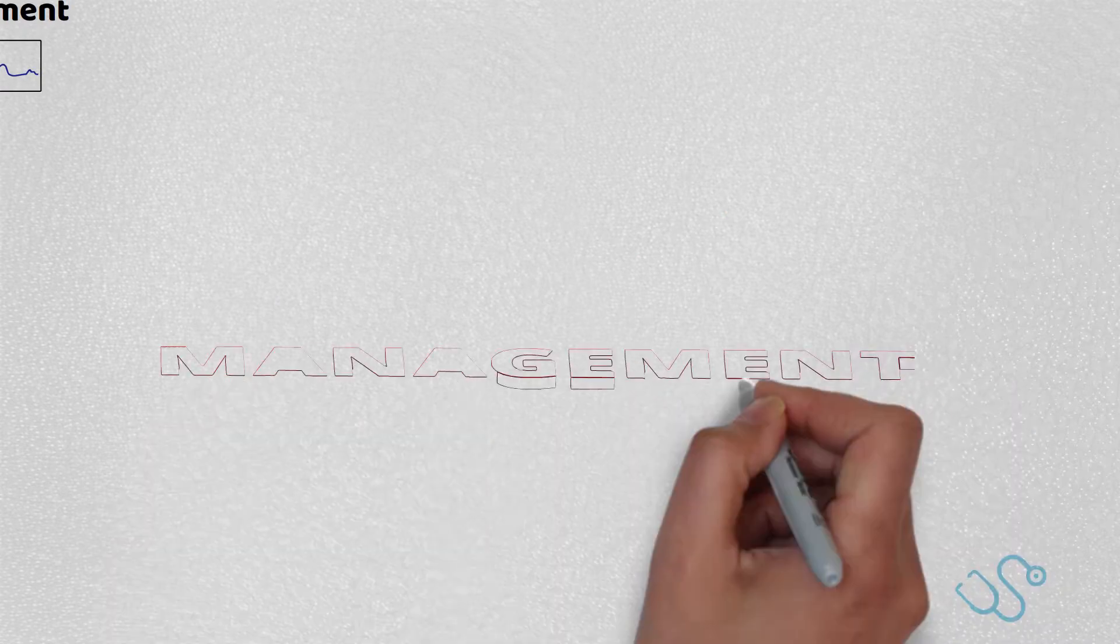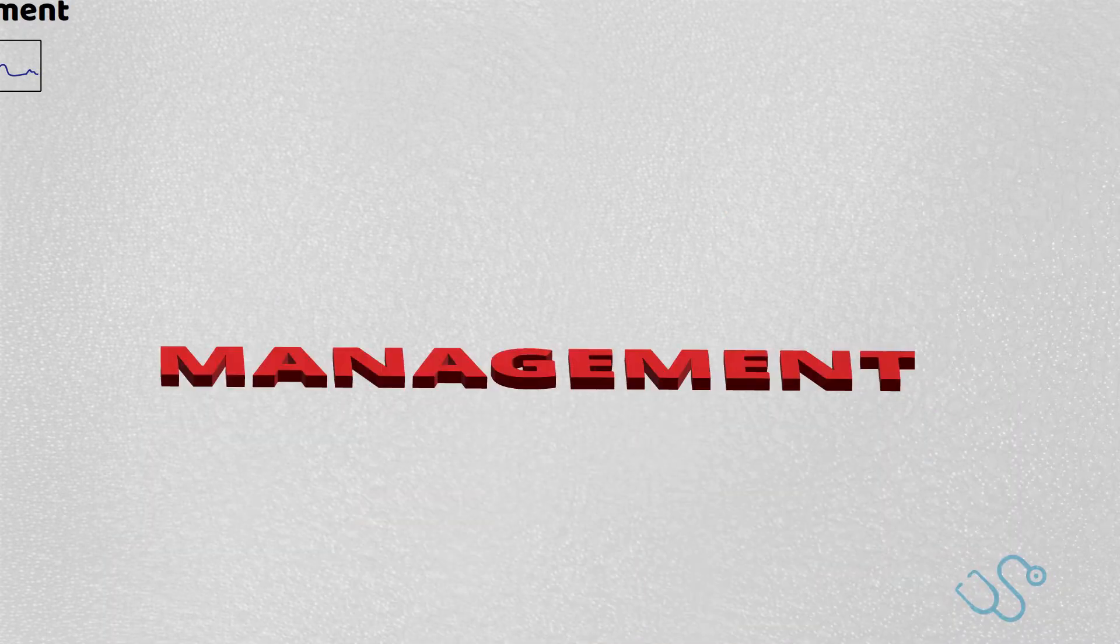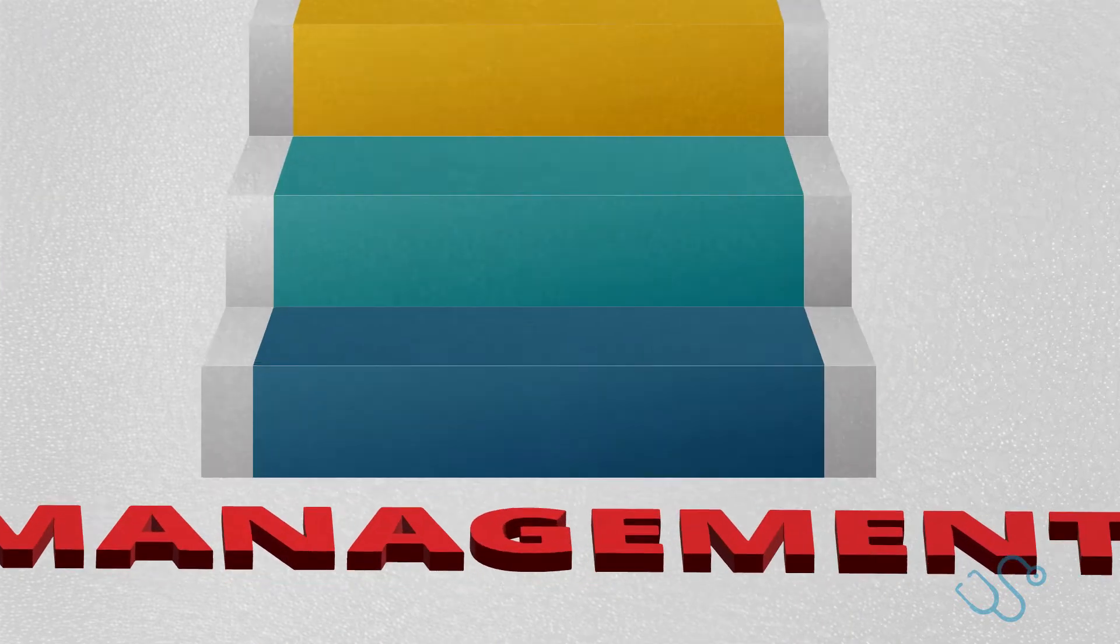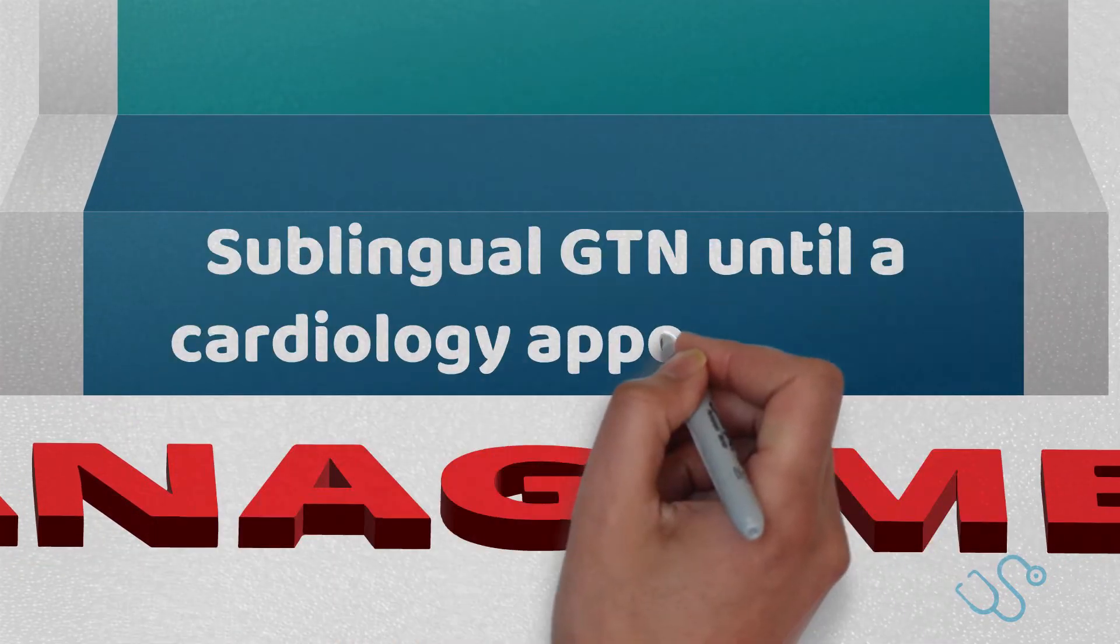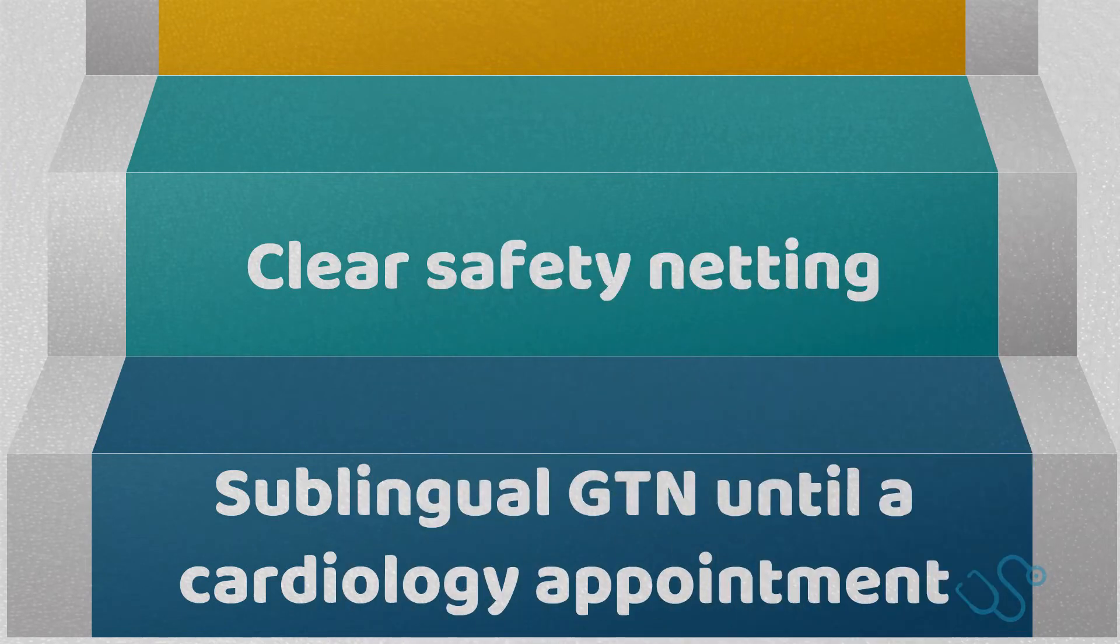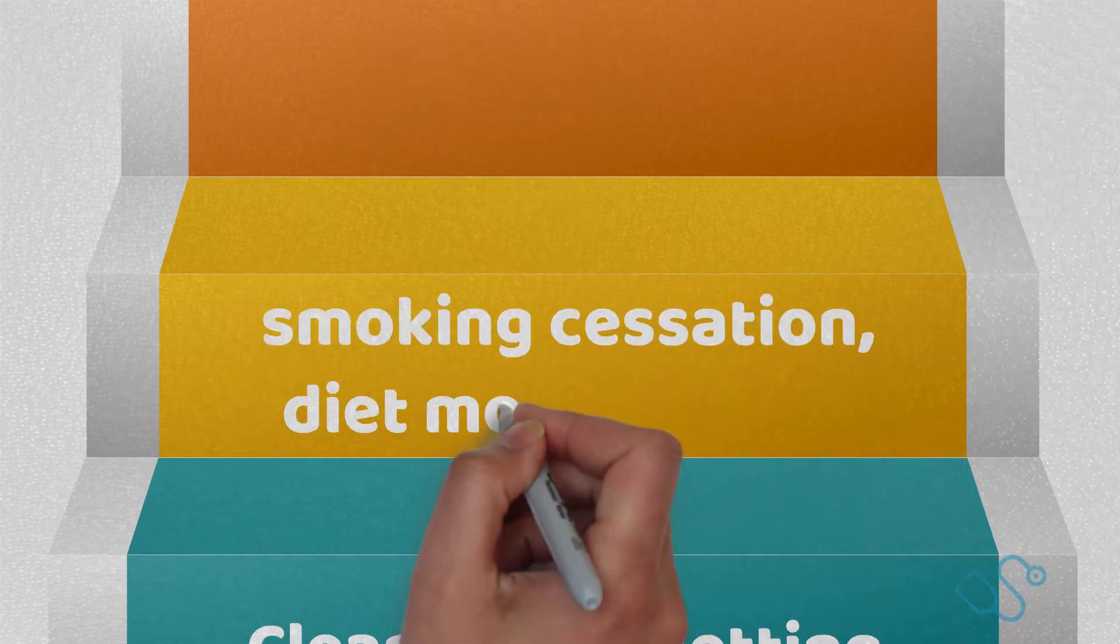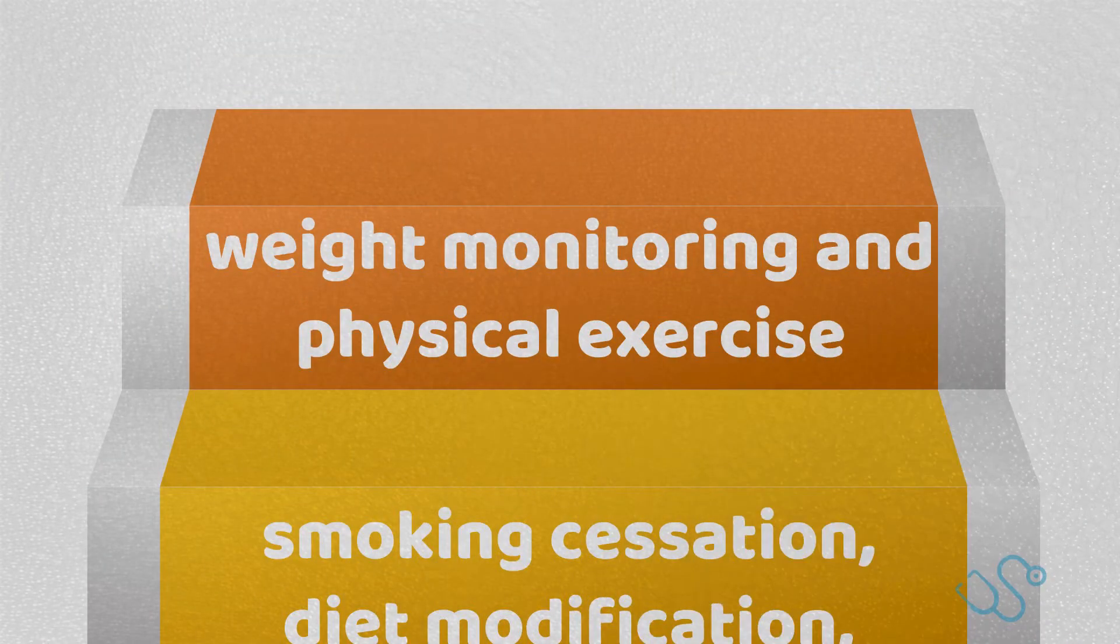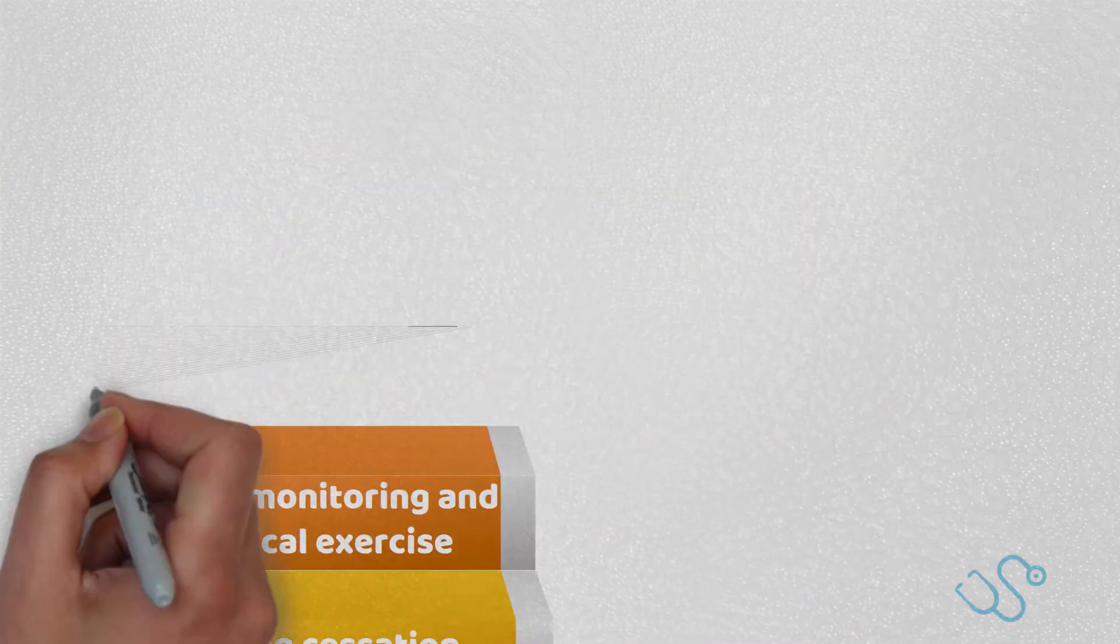Once a diagnosis is established, following local policies to obtain a cardiology assessment as soon as possible is vital. NICE recommend the use of sublingual GTN until a cardiology appointment with clear safety netting is achieved. In addition, NICE recommend risk factor modifications including smoking cessation, diet modification, weight monitoring, and physical exercise, but the latter most obviously within the limitation of symptoms.